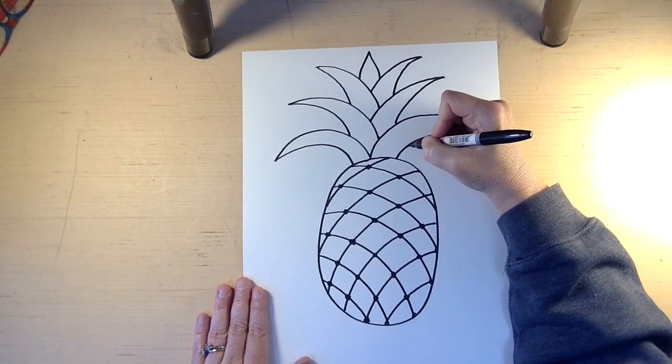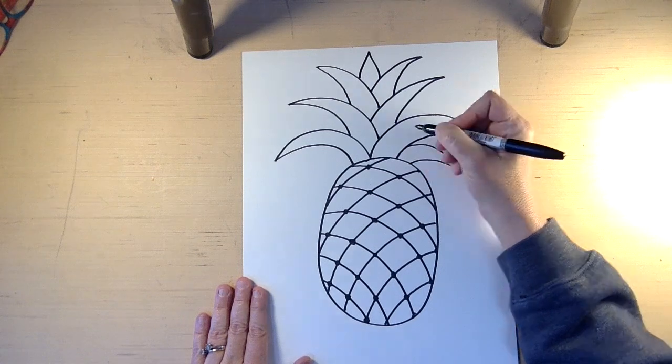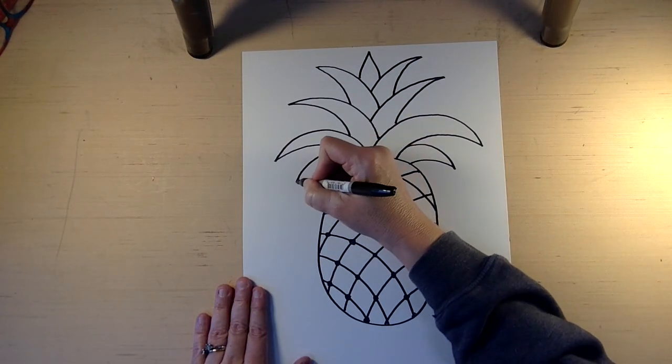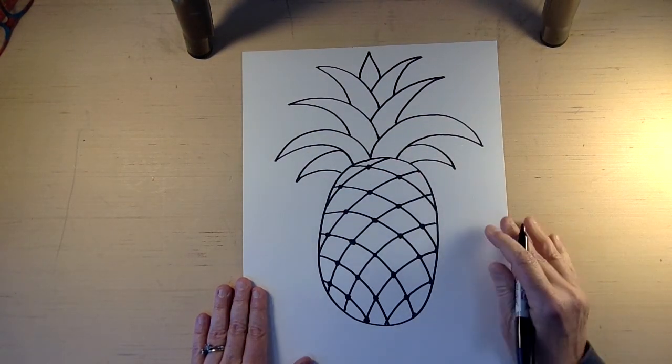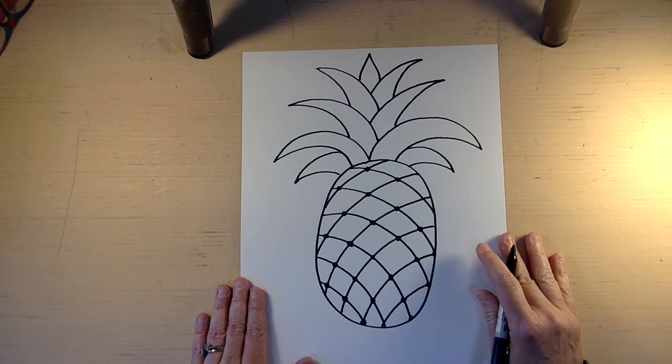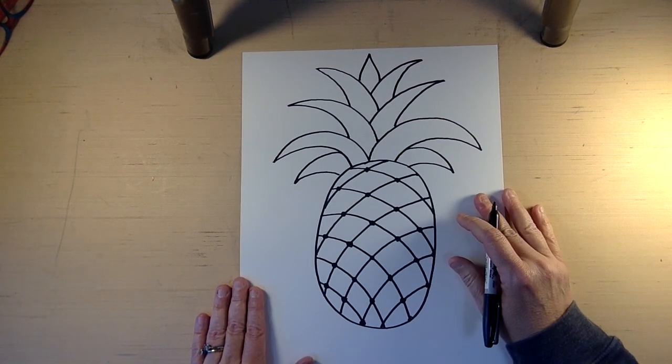And then if you want to, you can put maybe one little one on the side here and one little one on the side there. Looks like a bad hair day.